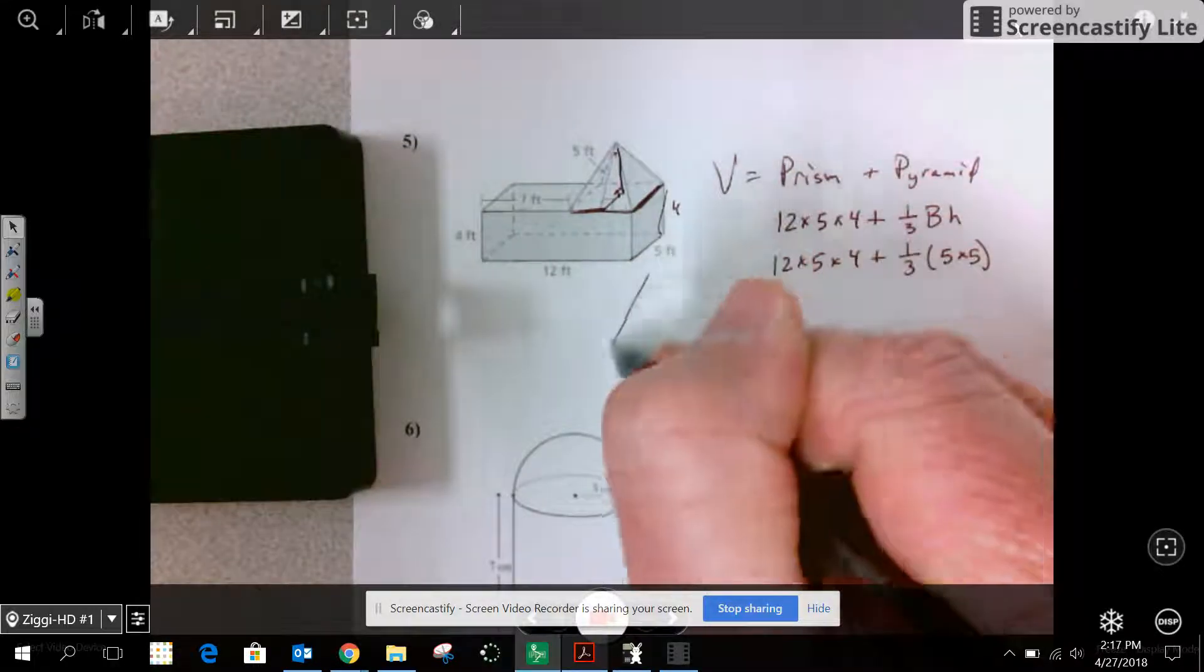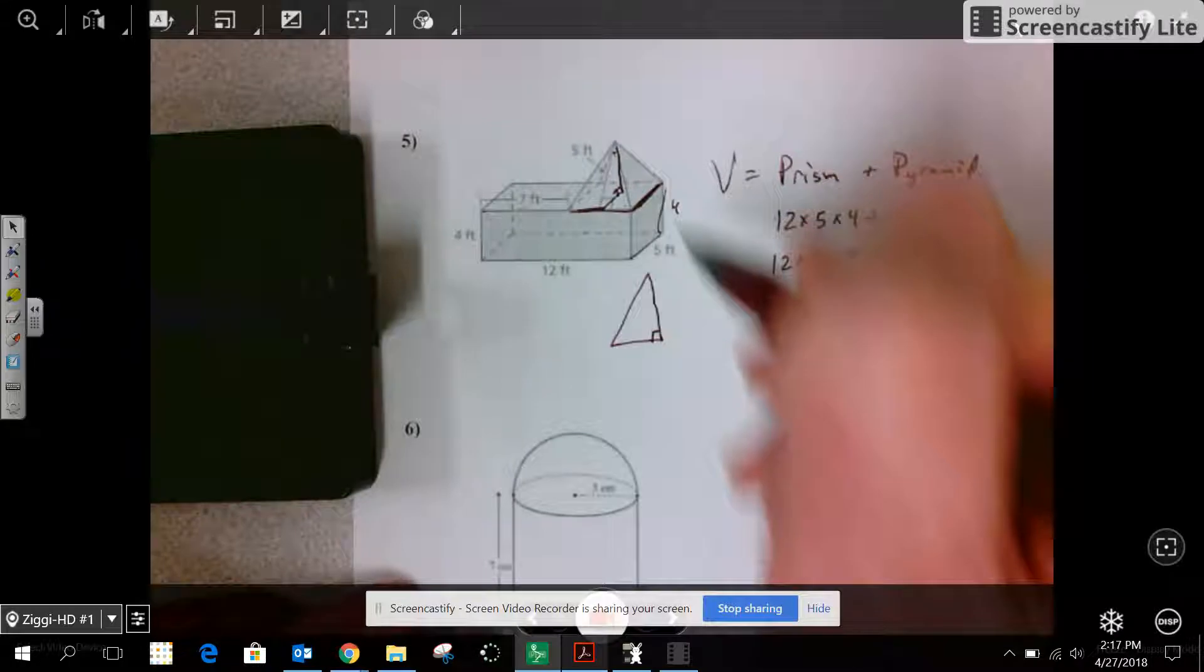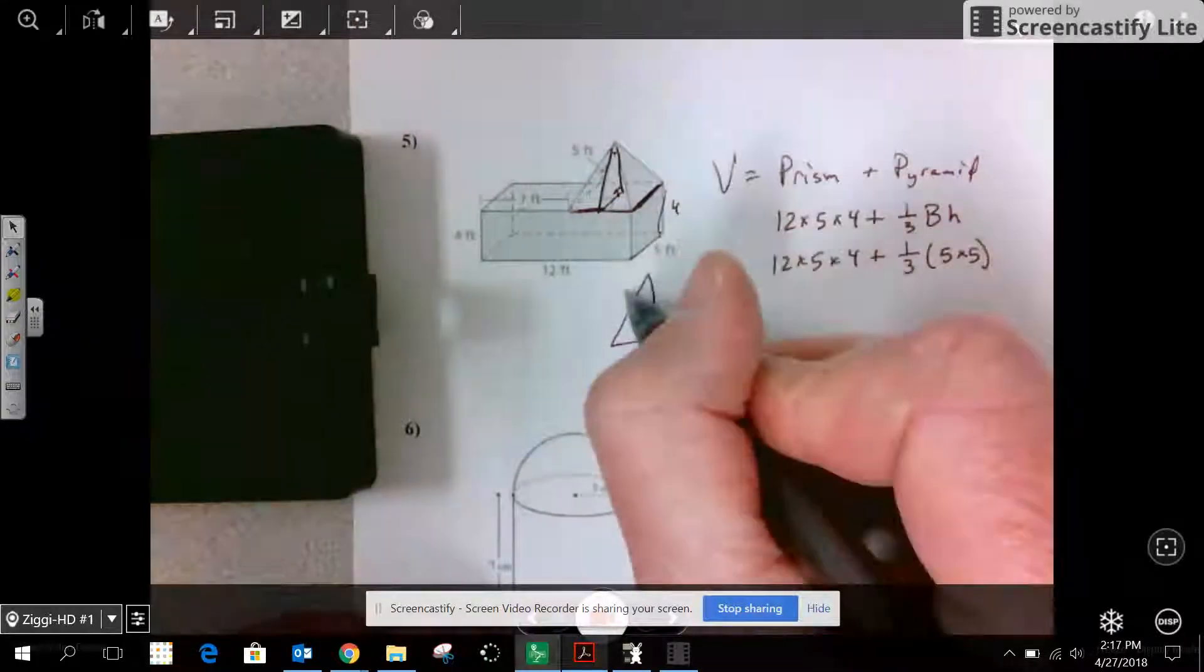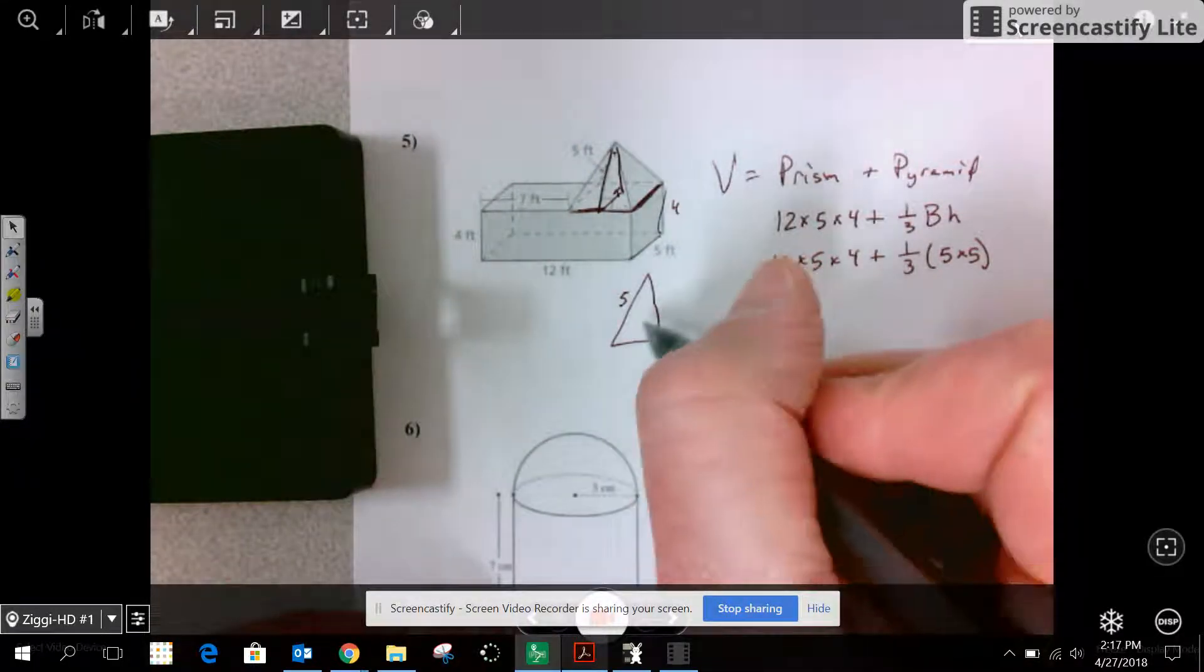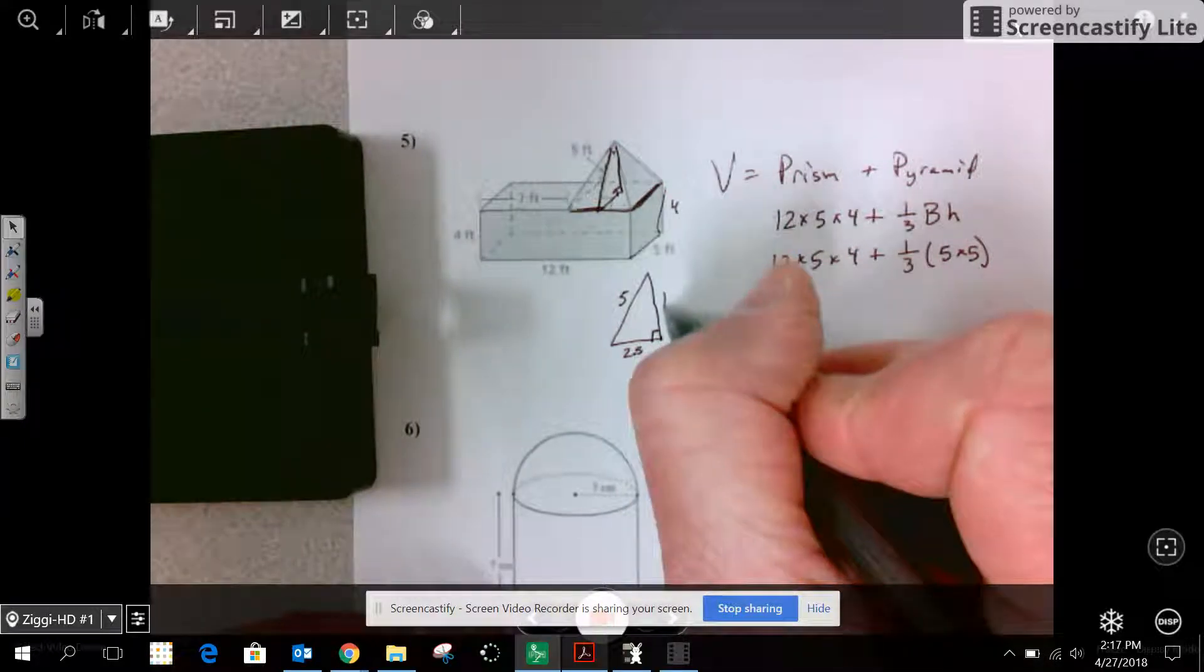So I have a little right triangle in there that I'm going to bring out, this right triangle right here. And the hypotenuse is 5. This bottom part is 2.5. This is the height.